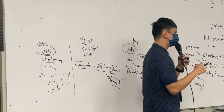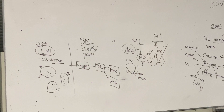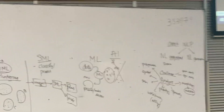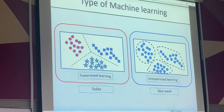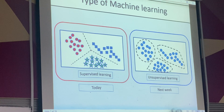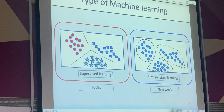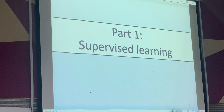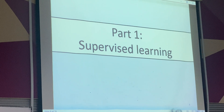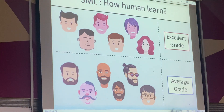These are the differences between supervised and unsupervised. Next week I'll cover unsupervised in more detail, but today you just need to understand supervised machine learning — it's mainly for classification or prediction. Let's move on to part one: supervised machine learning. Before we understand the algorithm, we need to know how humans actually learn something.